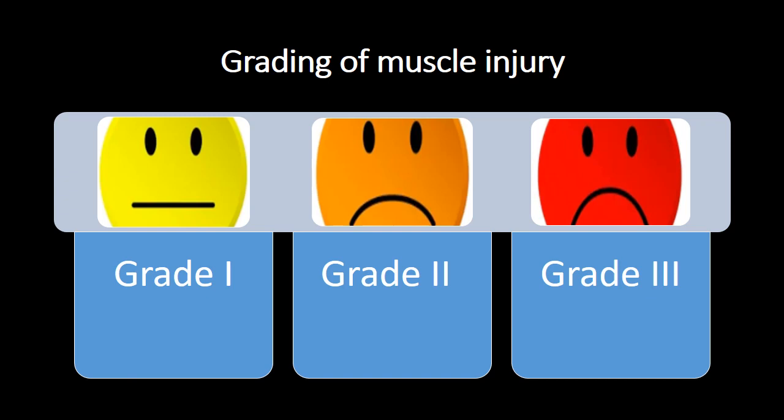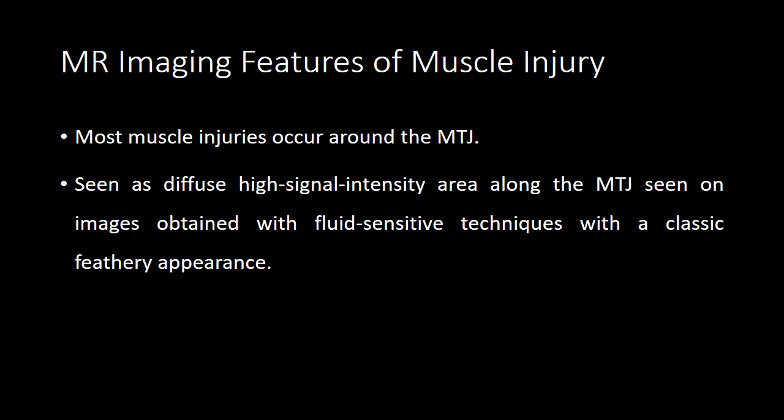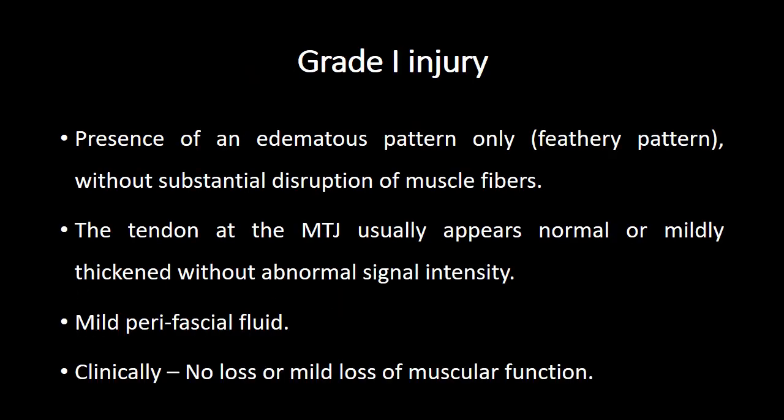Muscle injuries are graded into grade 1, grade 2, and grade 3 depending on the severity. Most muscle injuries occur around the myotendinous junction and this is seen as a diffuse abnormal area of high signal intensity around the myotendinous junction, giving a classical feathery appearance. Grade 1 injury is presence of diffuse muscle edema without obvious disruption of the muscle fibers. The tendon at the myotendinous junction appears normal or mildly thickened. There can be a mild degree of perifascial fluid, and clinically there is no loss or just mild loss of muscular function.